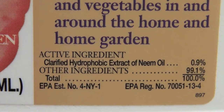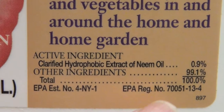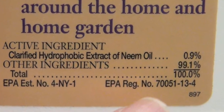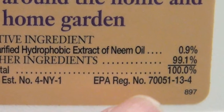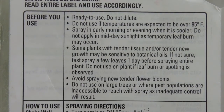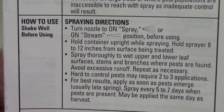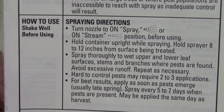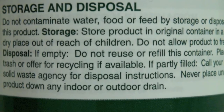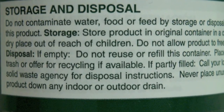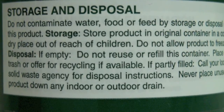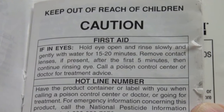The pesticide label tells us what the active ingredient is as a percentage of the pesticide, what inert or inactive ingredients are included as a percentage of the pesticide, the Environmental Protection Agency registered product number, how to use the pesticide safely and effectively including whether special applicators or sprays must be used, how to store the pesticide, how safely to dispose of the residual pesticide and container, and how to give first aid.